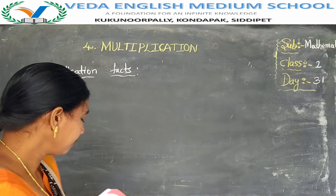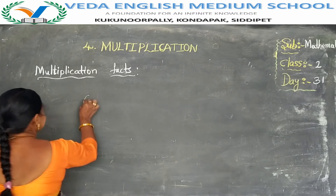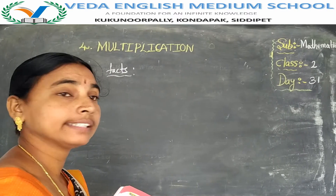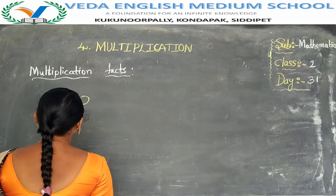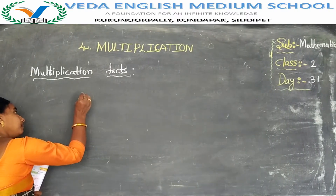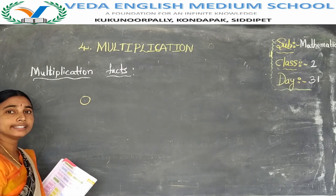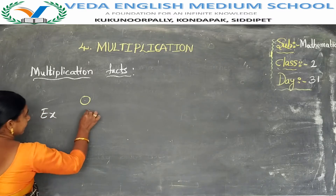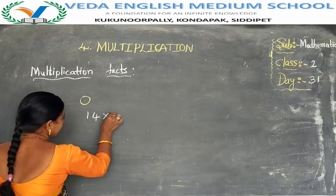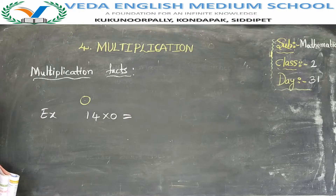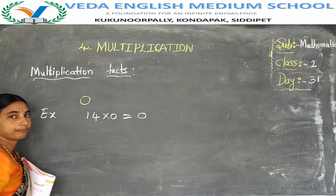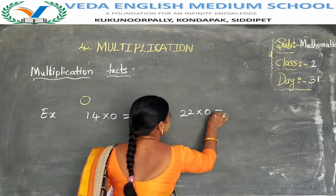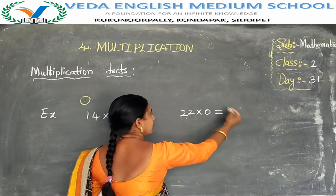When a number is multiplied by 0, the answer is always 0. For example, 14 into 0 — 14 zeros are 0. And 22 into 0 — that means 0.